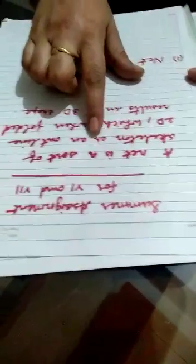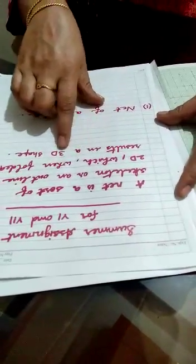You know what is a net? A net is a sort of skeleton or an outline in 2D which when folded results in a 3D shape.